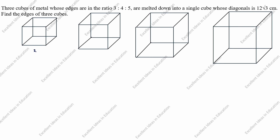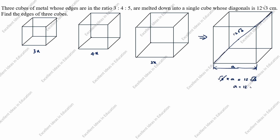The three cubes of metal have edges 3x, 4x, and 5x. They are melted down into a single cube with edge length 'a'. The diagonal of the single cube is given as 12 root 3. Using the diagonal formula: root 3 into a equals 12 root 3, so root 3 cancels and a equals 12 centimeters.